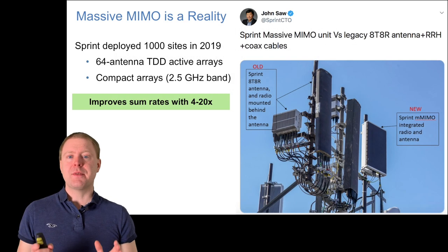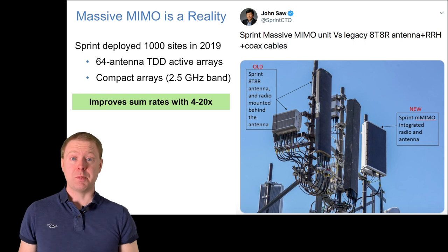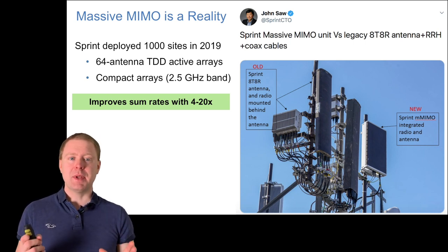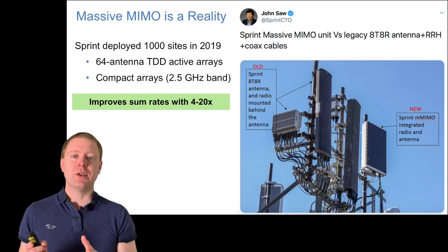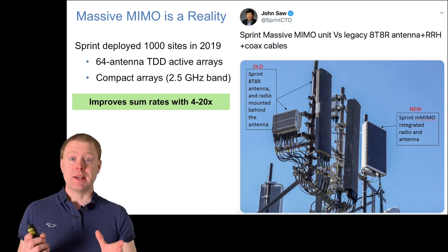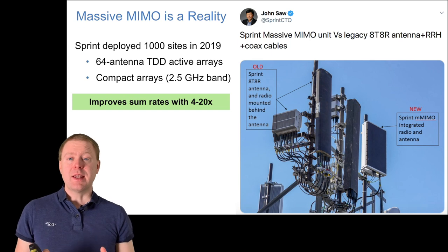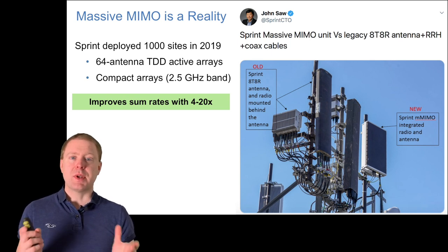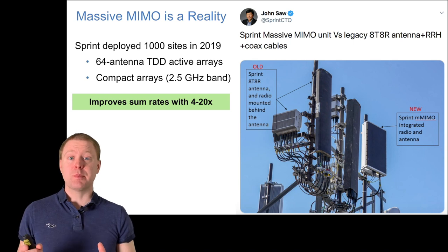I'll start by discussing massive MIMO, the state-of-the-art 5G technology for building base stations. It consists of many active antenna elements that can direct signals up and down from your transmitter. It has been developed over the past 10 years, but now it's really a reality. Just in the US, the operator Sprint deployed a thousand sites with this technology.